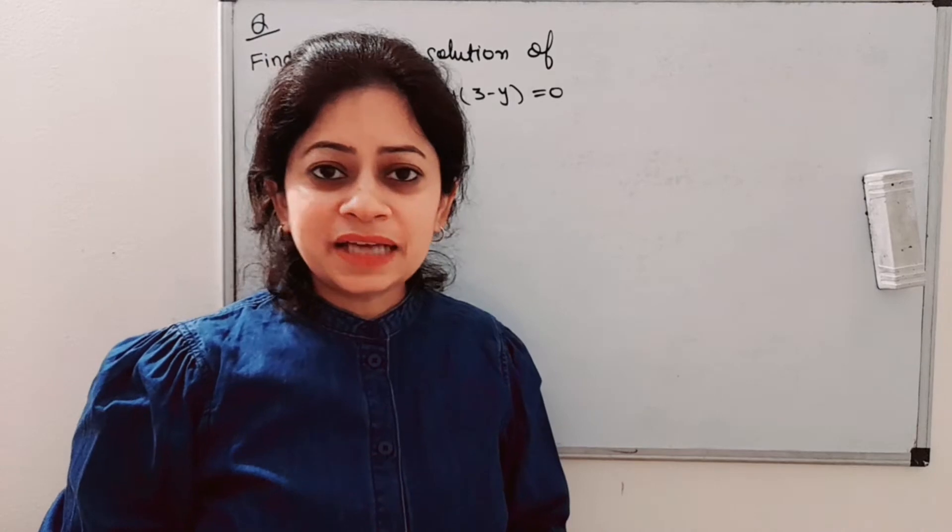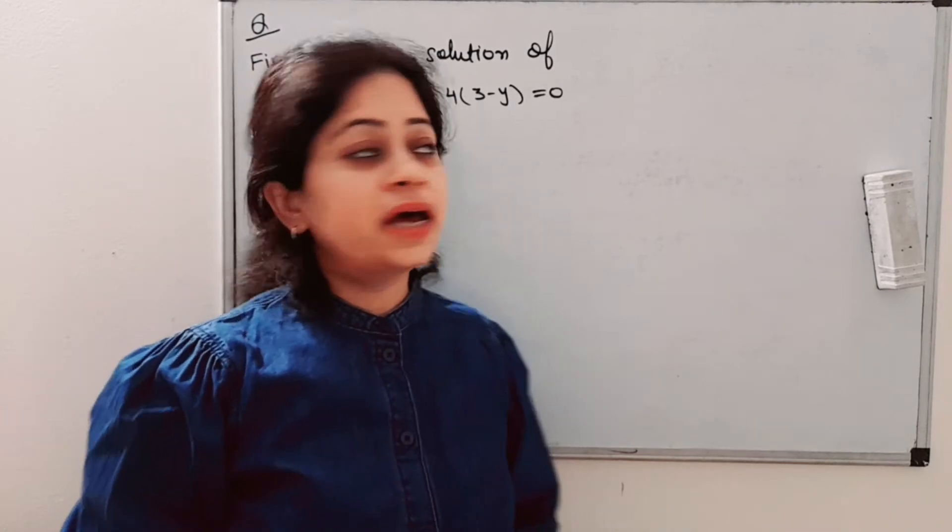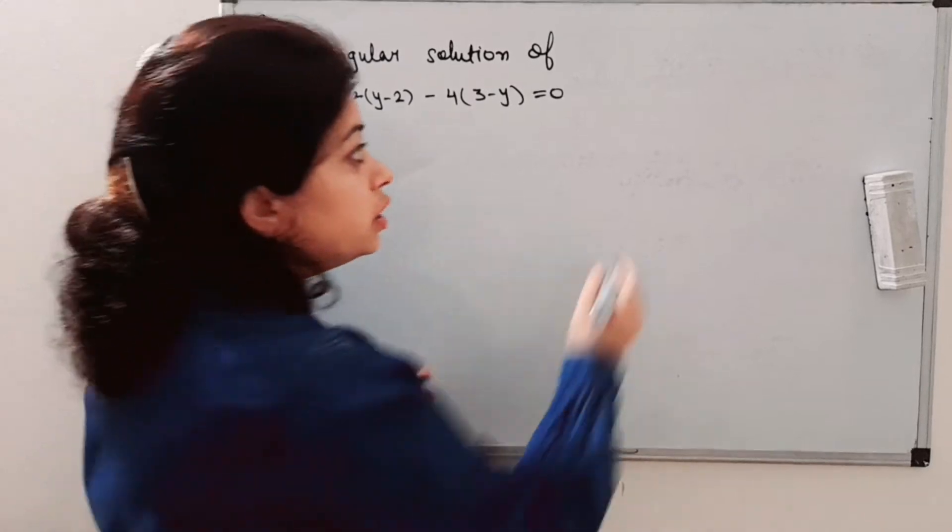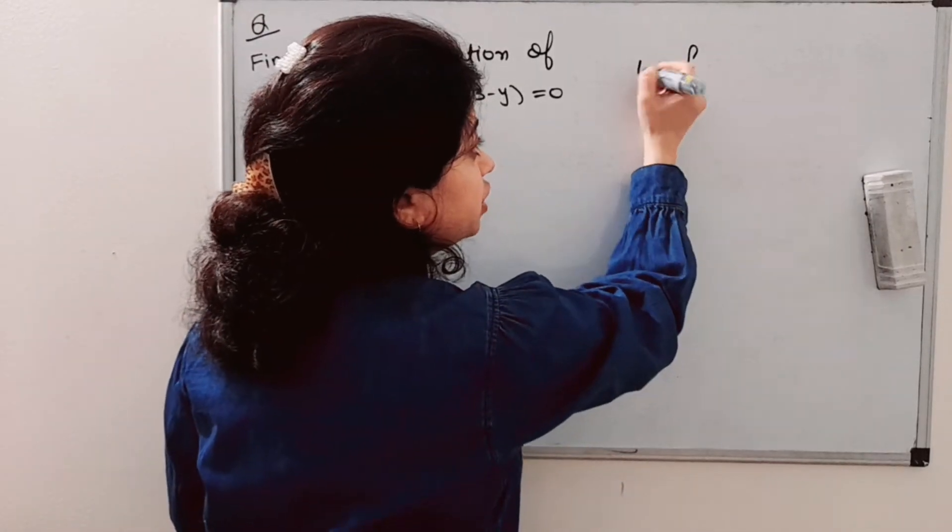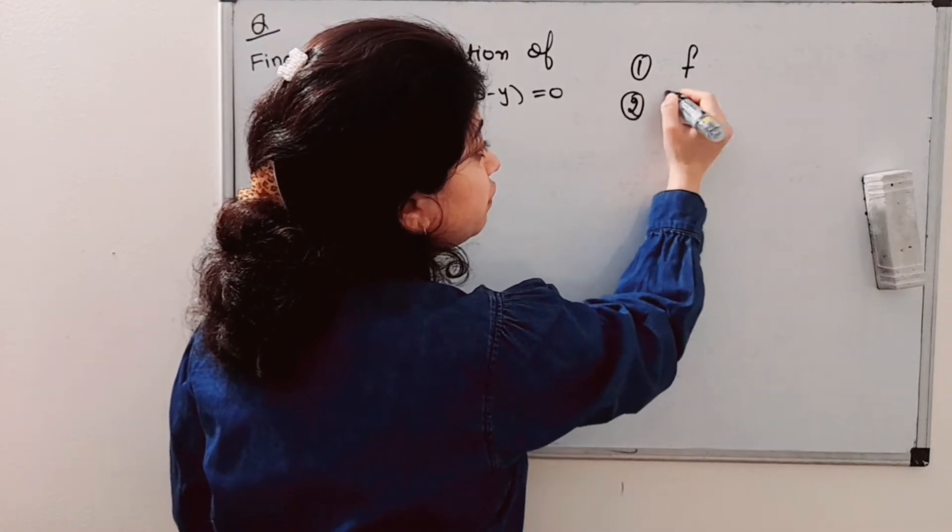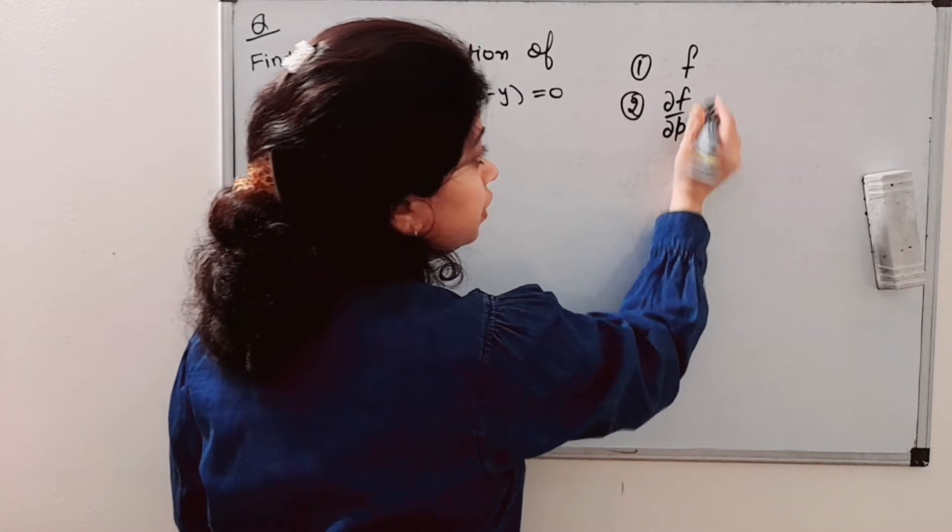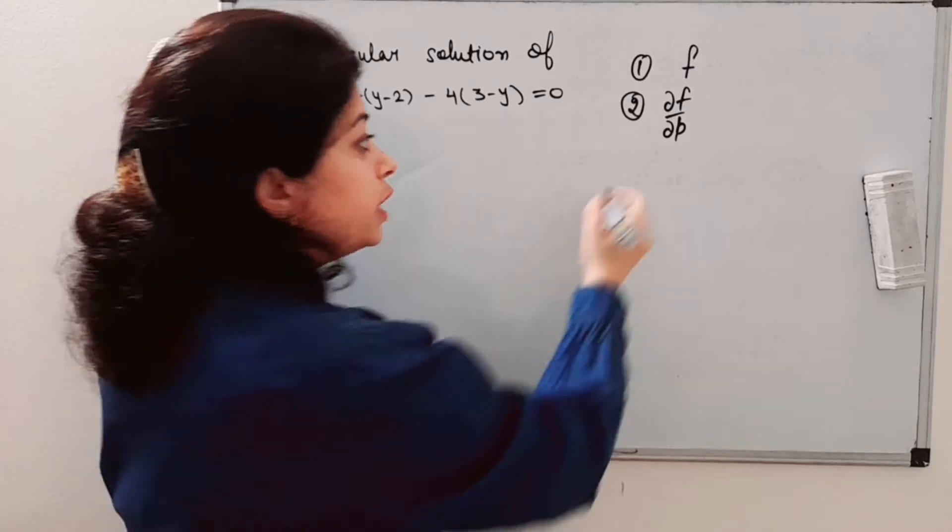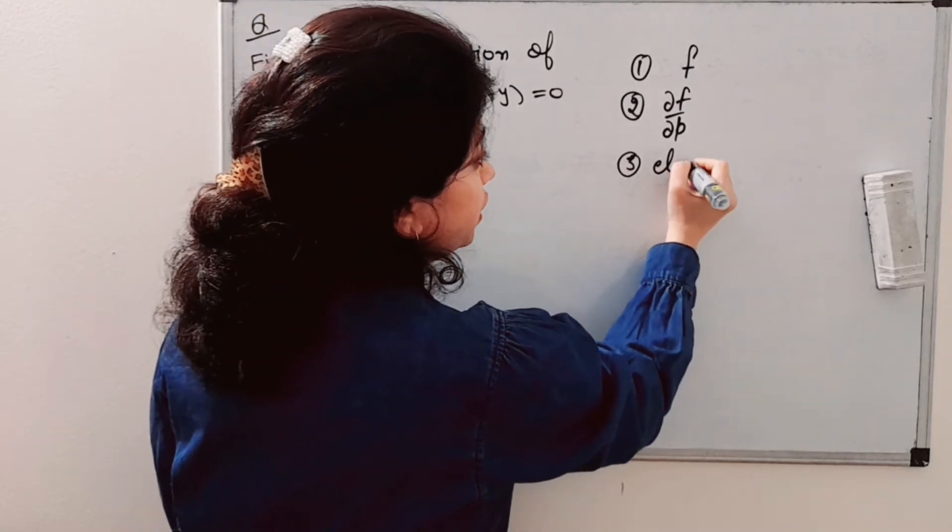Now we have this example and I hope you have understood the method of finding singular solution. If you have a given differential equation, you need to differentiate it with respect to p, where the differential equation was in one parameter family p, and then you need to eliminate p.